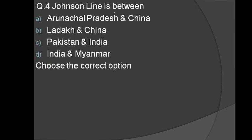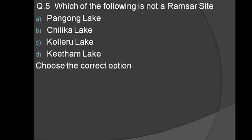The Johnson Line is between Ladakh and China. If you look at this, there is also the McMahon Line. Which of the following is not a Ramsar site?